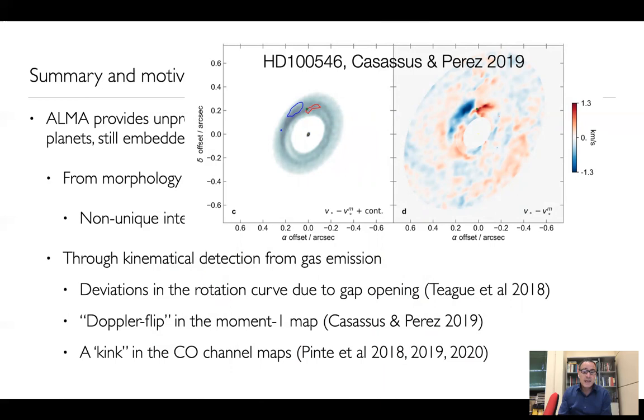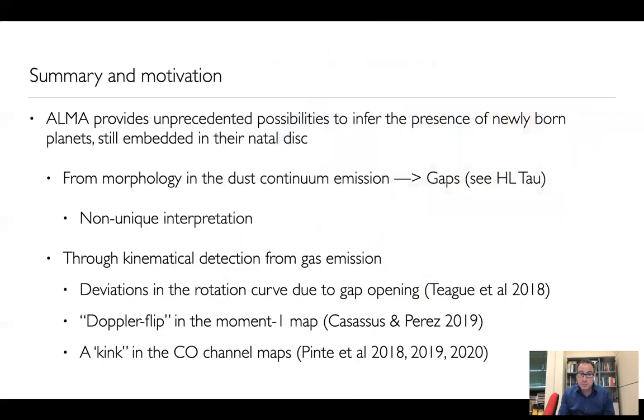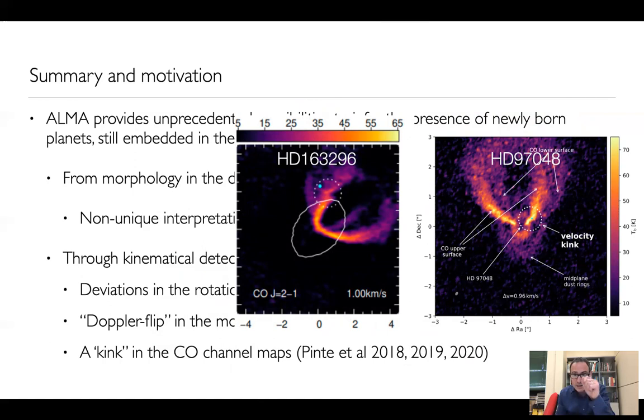Finally, the technique that I want to focus on in this talk is the one developed by Christoph and collaborators, where we observe the channel maps of CO, and we observe a peculiar kink in the channel map as compared with the standard Keplerian case. And this kink is supposedly produced by the presence of an embedded planet.